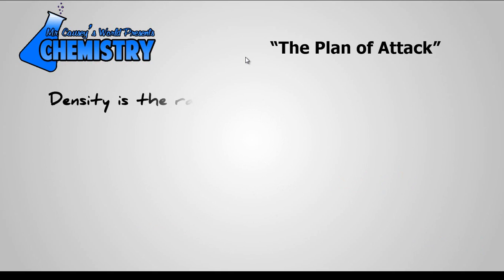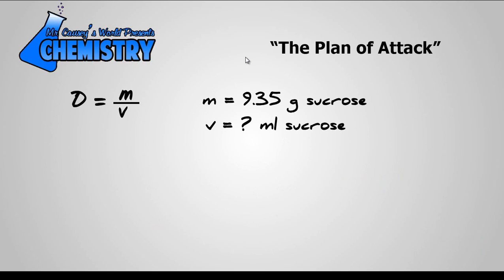Let's first develop a plan. Density is the ratio of mass to volume and represented by the equation d equals m over v. Now we know that the mass of sucrose is 9.35 grams but we don't know the volume. So how can I get the volume of sucrose? Well it just so happens that the flask volume minus the benzene volume would equal the sucrose volume.